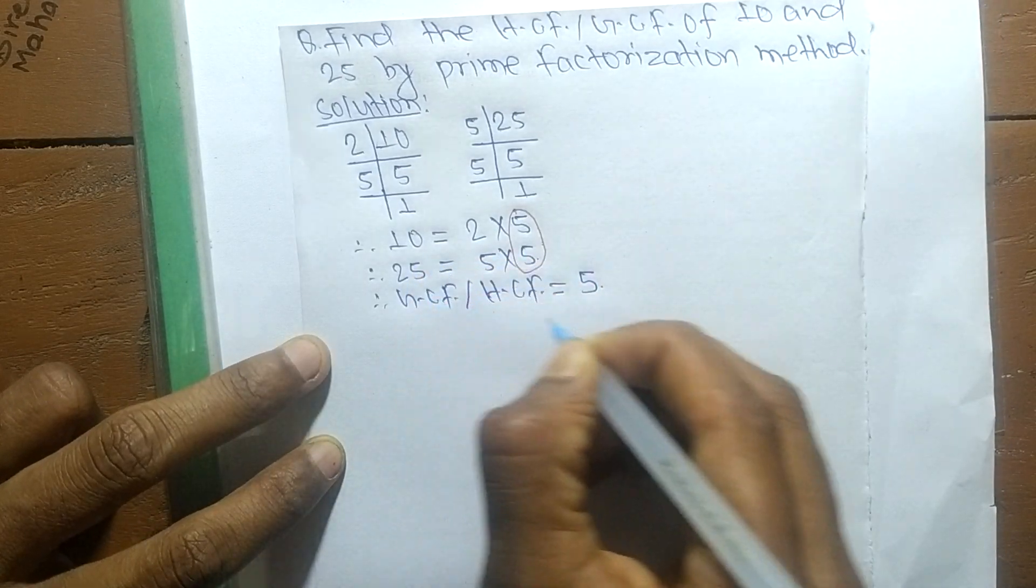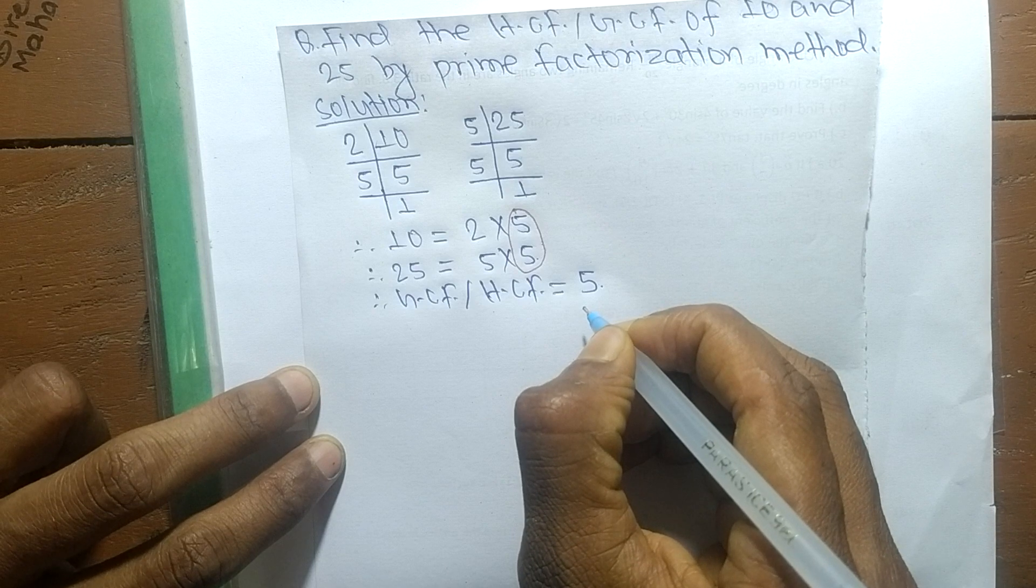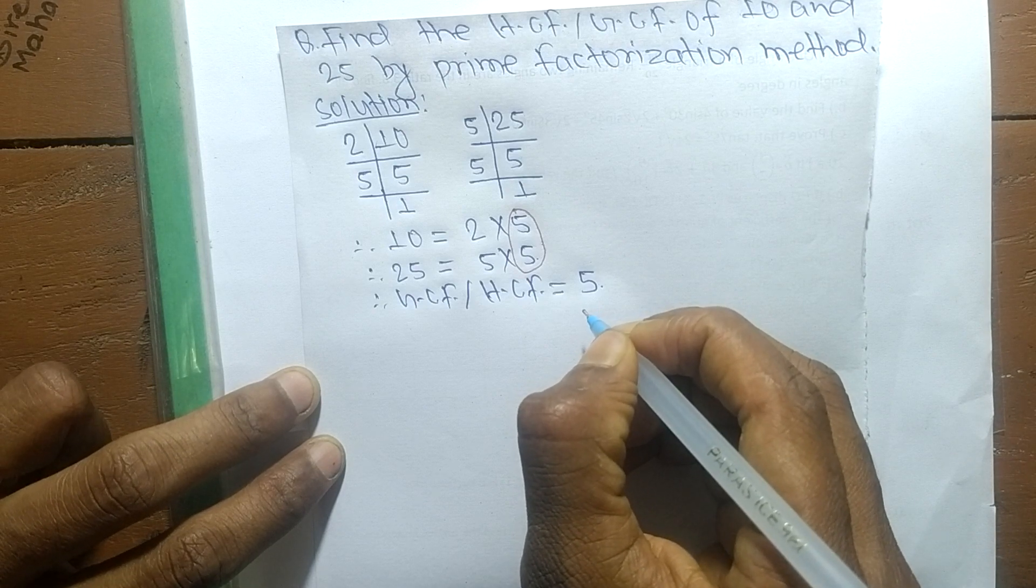This means the GCF of 10 and 25 is 5. So this much for today and thanks for watching.